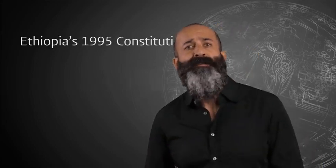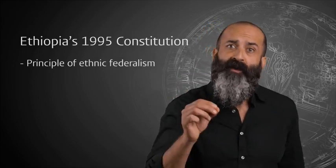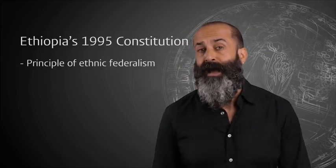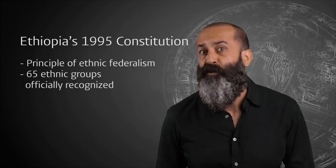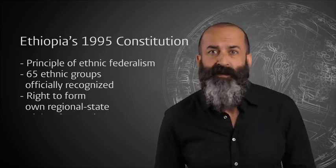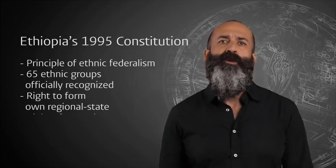Ethiopia's post-conflict 1995 constitution is based explicitly on the principle of ethnic federalism, recognizing all the nations, nationalities, and peoples inhabiting the country. 65 different ethnic groups are officially recognized, and each ethnic group is granted the right to form its own regional state, of course subject to some political and procedural qualification.